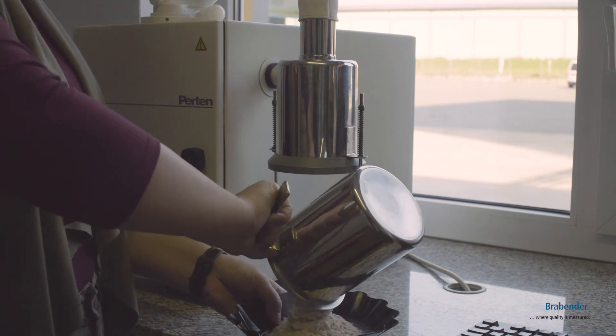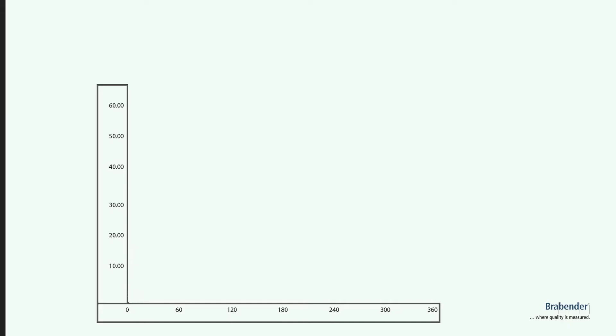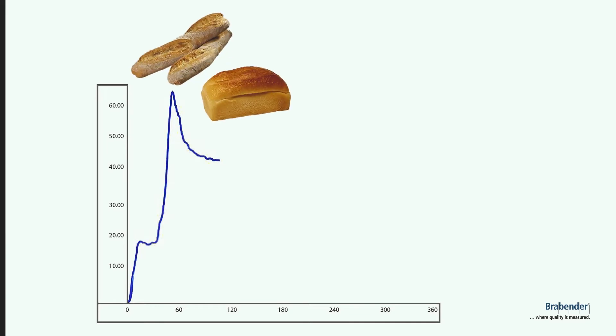The laboratory staff is able to classify the analyzed flour by means of different peak times and heights. Strong flour with a high proportion of gluten demonstrates rapid high peaks.